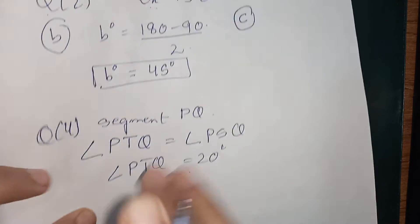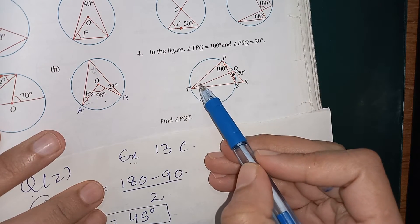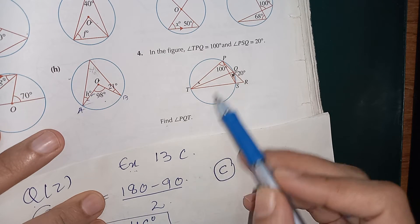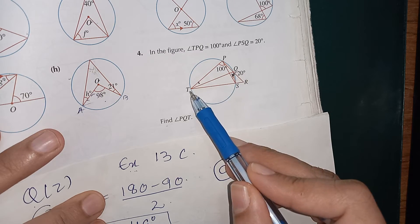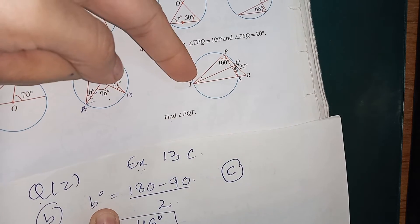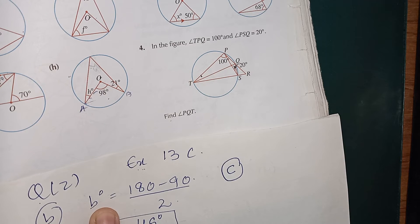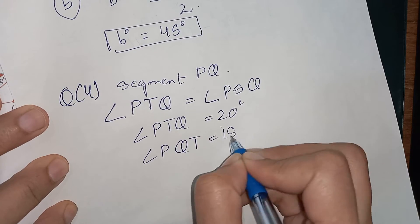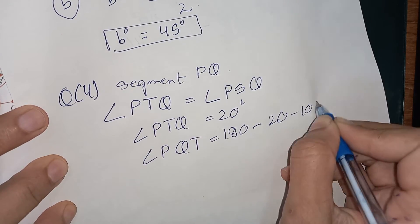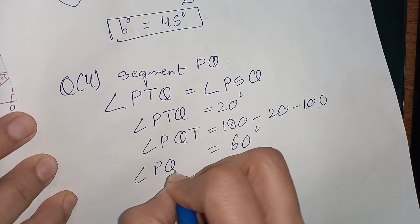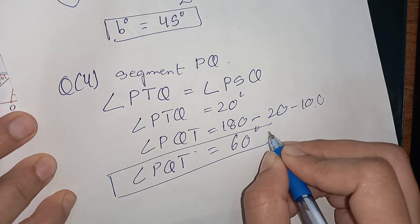Now that we know angle PTQ is 20 degrees, simply apply the angle sum of a triangle and subtract: angle PQT equals 180 minus 20 minus 100, giving 60 degrees. So angle PQT equals 60 degrees.